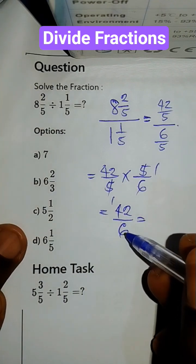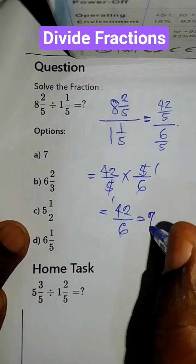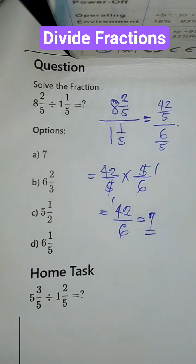How many 6 can you find in 42? 6 times 7. 42 is our final answer.